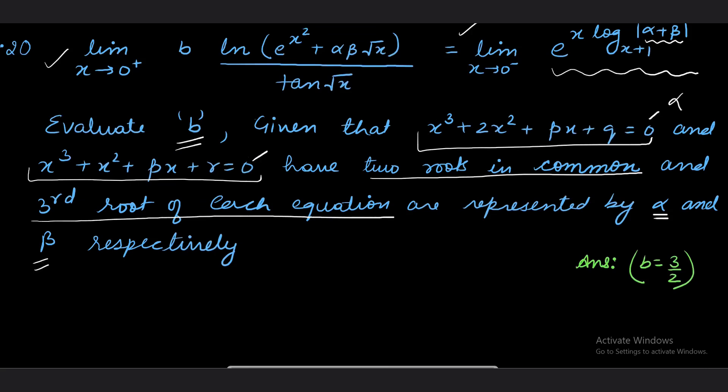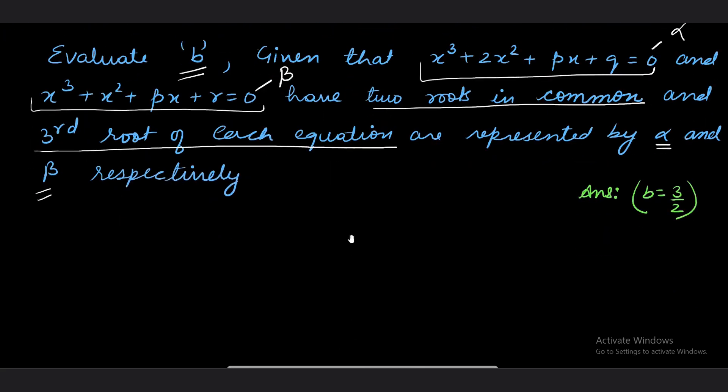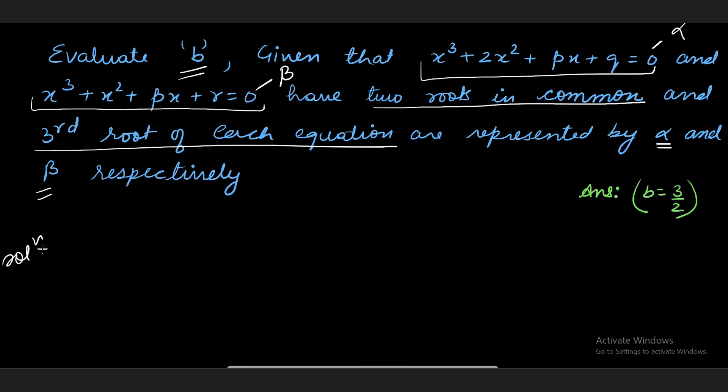So alpha is the third root of this equation and beta is the third root of that equation. From here alpha and beta will be obtained, and once I get alpha and beta, I'll be able to evaluate the limit. So the first step is to find alpha and beta.